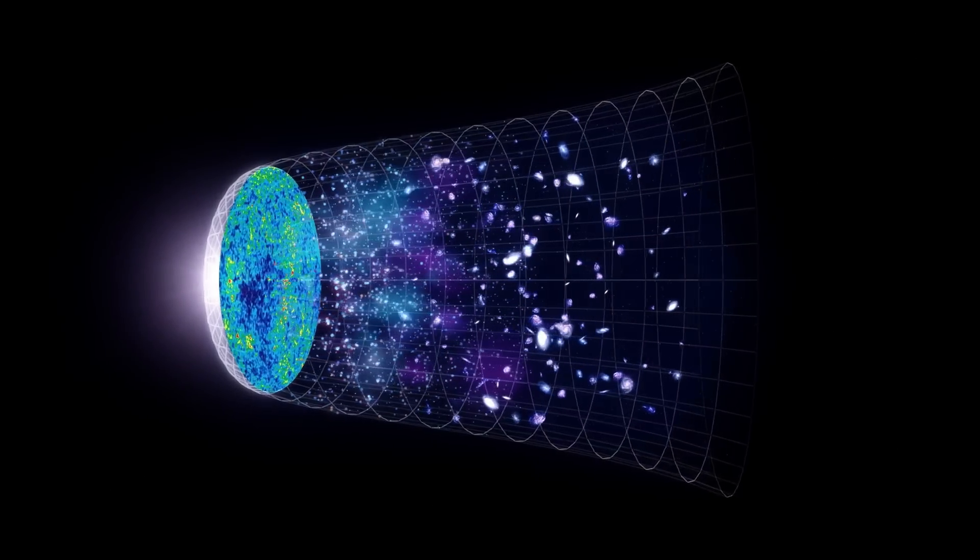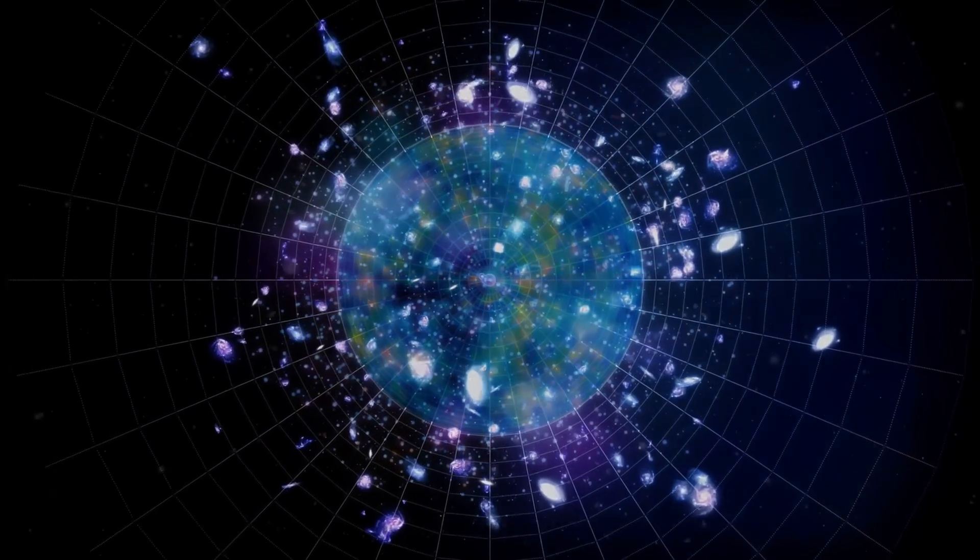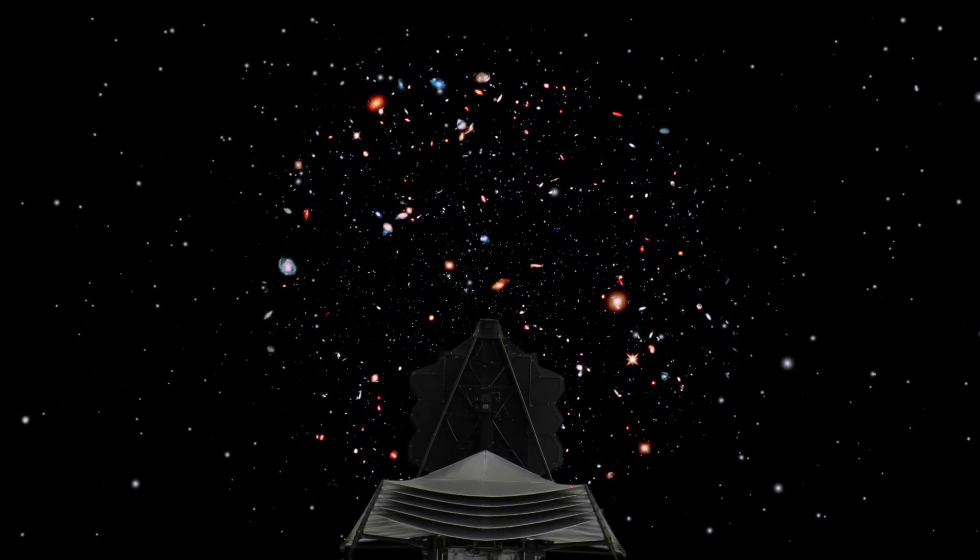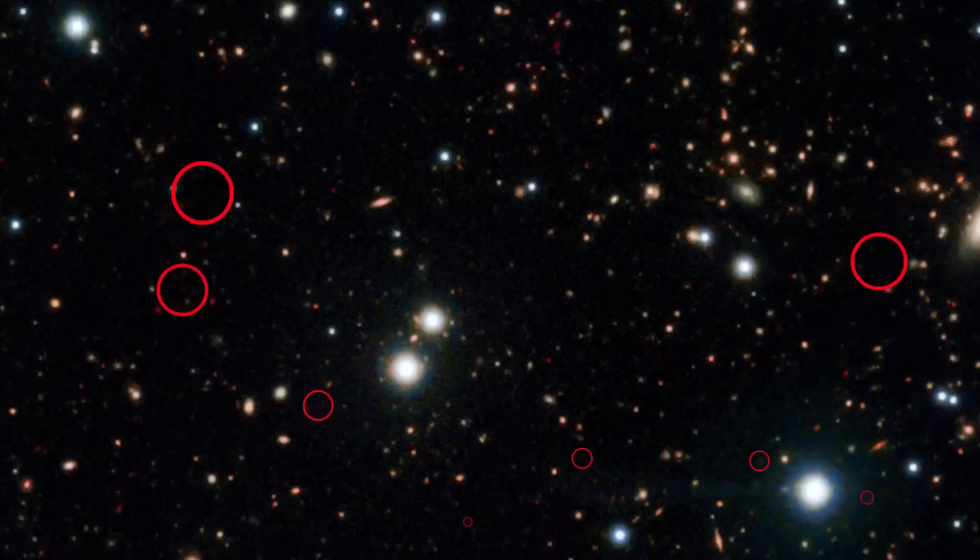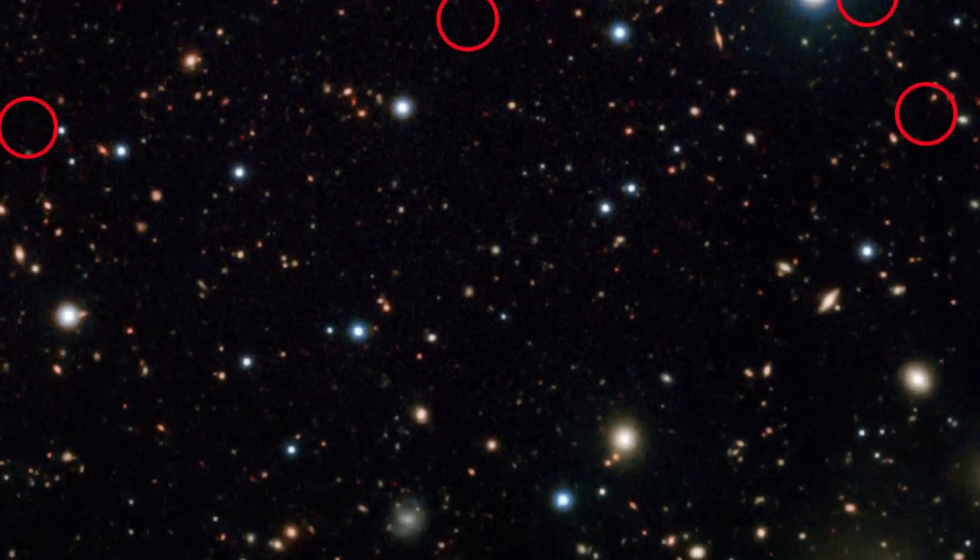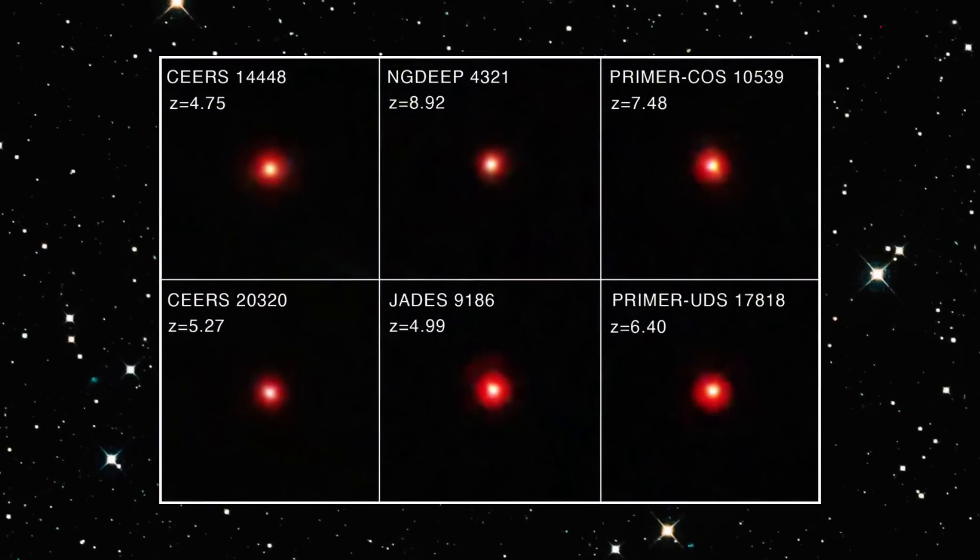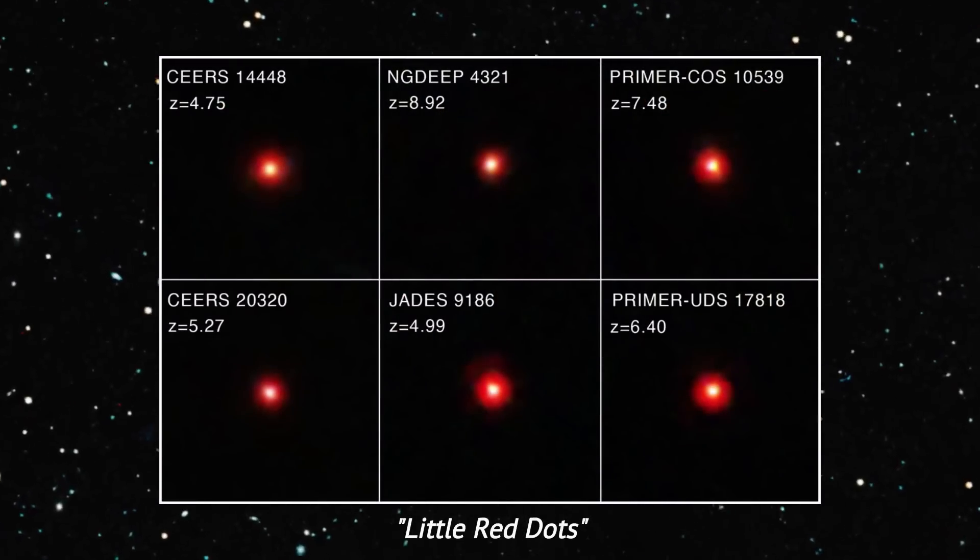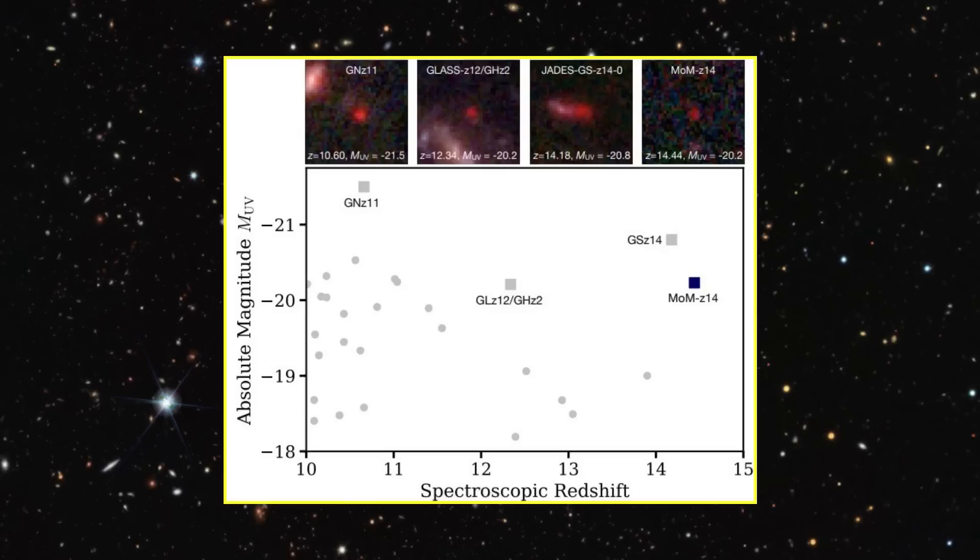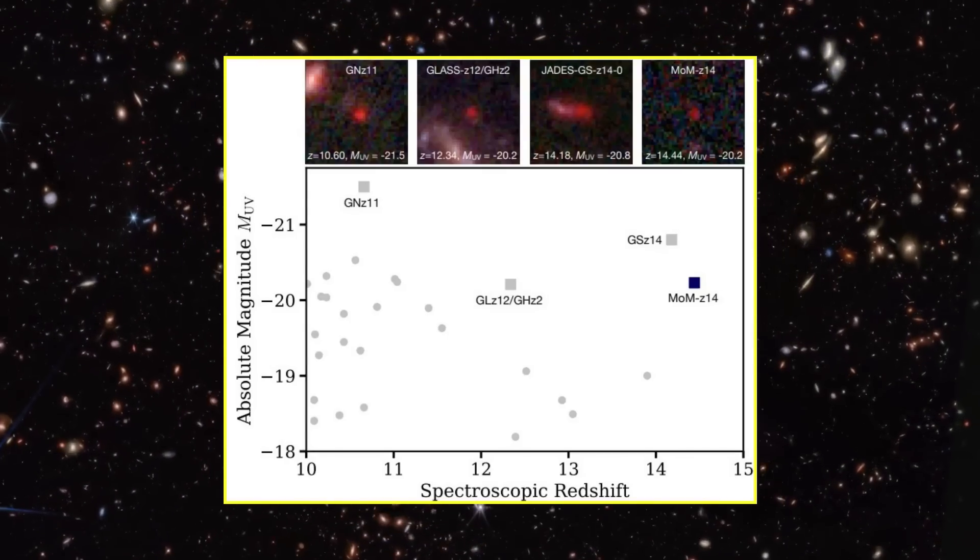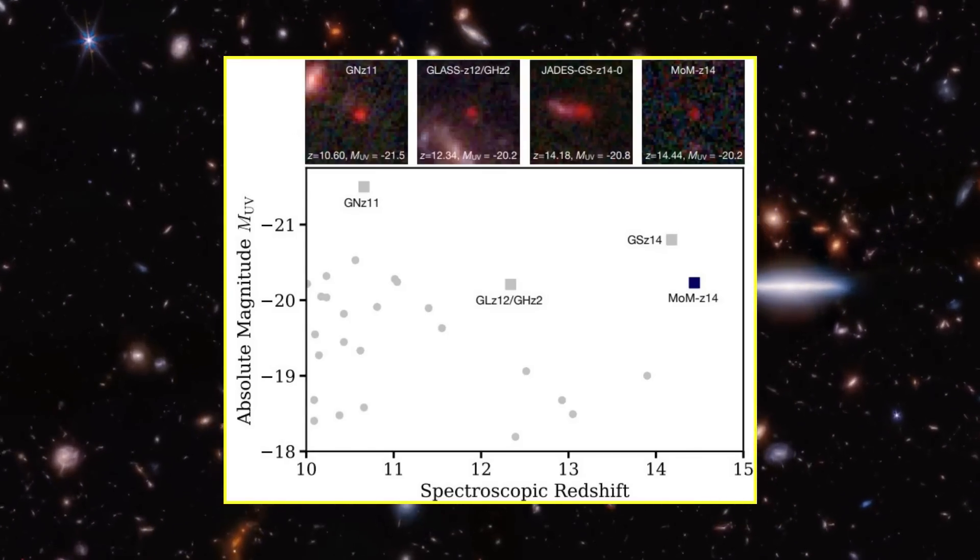It raises a big question. How many more galaxies, like MACS0647-JD, are out there? Before JWST, we thought galaxies this early would be incredibly rare. But now we've found more than we ever expected. These ancient, bright galaxies, sometimes called little red dots, are popping up across JWST's surveys. And astronomers now believe that MACS0647-JD may be the record holder as of now, but it might not be for long.